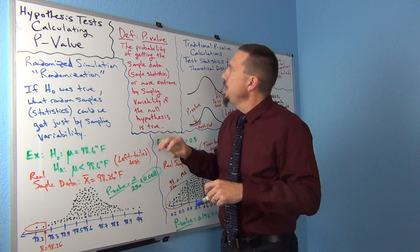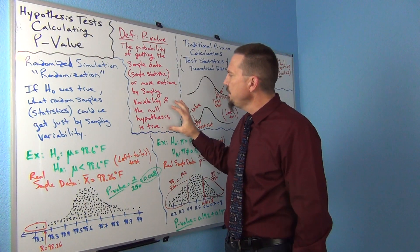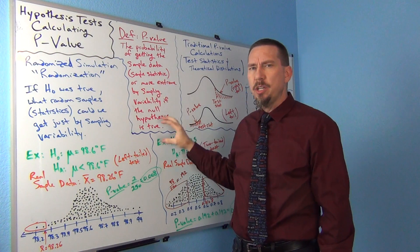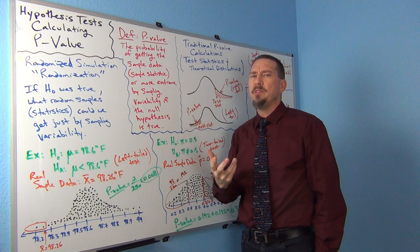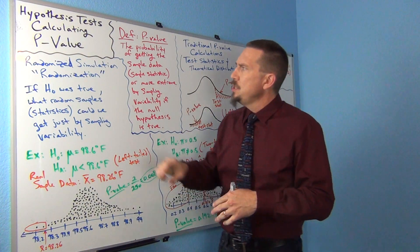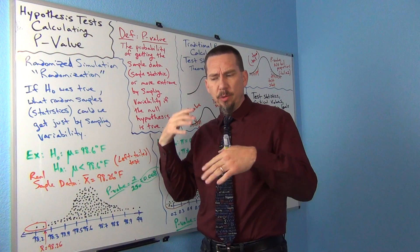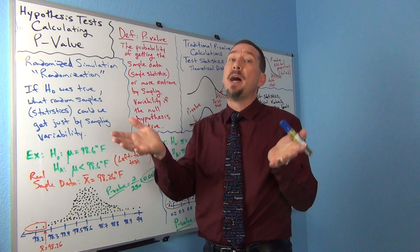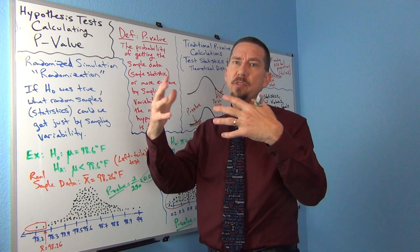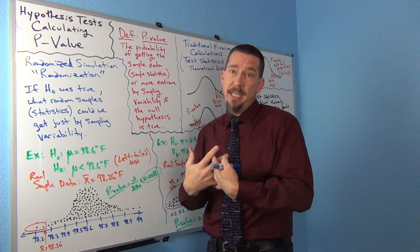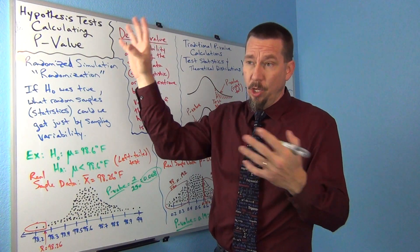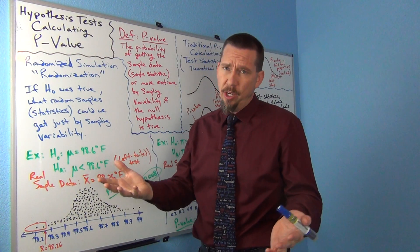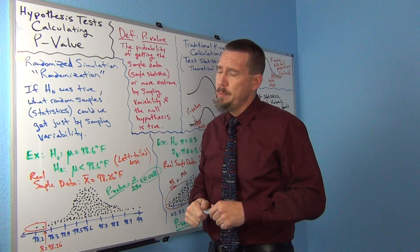Think about it this way: the p-value definition says that if the null was true, what would we be likely to see by sampling variability? We have to see what sampling variability would look like if the null hypothesis was really true. In a simulation, they're going to create a simulated sampling distribution under the premise that the null hypothesis was true — what kinds of random samples would I be likely to see from that population? That's the key idea behind a randomization approach.